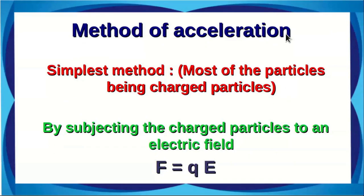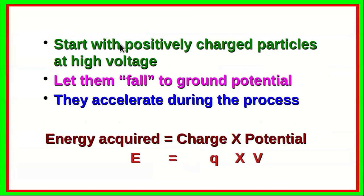The method of acceleration — imparting higher energies to the incident particles — is straightforward since they are charged particles. The simplest method is by subjecting them to an electric field E; for a particle with charge Q, the force is Q times E. We start with positively charged particles at high voltage and let them fall to ground potential. In this process they accelerate, and the energy acquired equals Q times V. So if we have a potential of 1 million volts and a proton (Q = 1), we get 1 MeV energy.